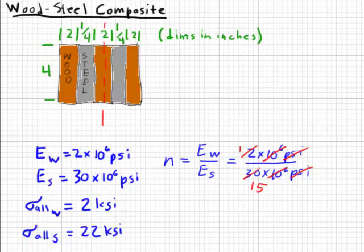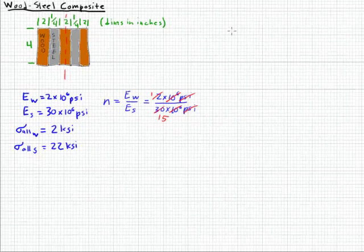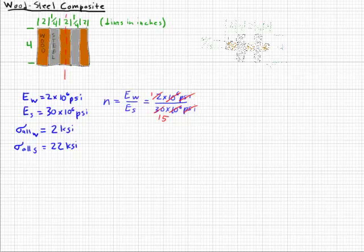So we're going to redraw this cross section. Here's the redrawn cross section. Note that the height of the wood has now changed to 4/15ths of an inch instead of its original 4 to account for the difference in the modulus of elasticity. Now we can continue and calculate the area moment of inertia based on that.